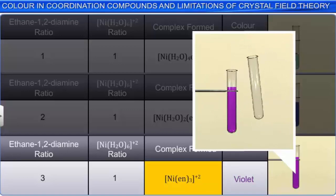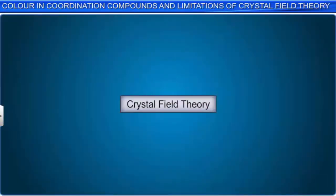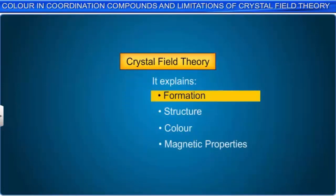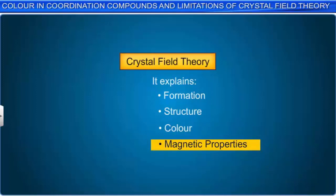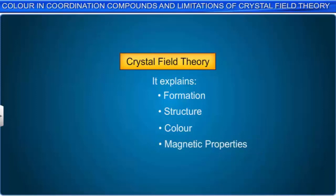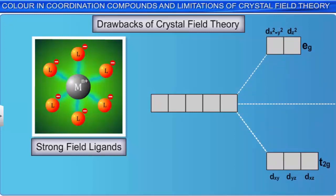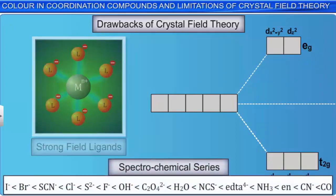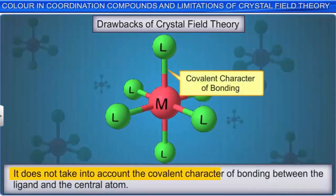Now let us see the drawbacks of the crystal field theory. Although it successfully explains the formation, structure, color, and magnetic properties of coordination compounds, it suffers from some drawbacks. If the assumption that anionic ligands are point charges were correct, anionic ligands should act as strong ligands and exert a greater splitting effect. However, anionic ligands are actually found at the low end of the spectrochemical series. Another drawback is that it does not take into account the covalent character of bonding between the ligand and the central atom.